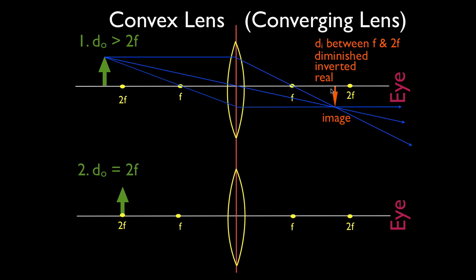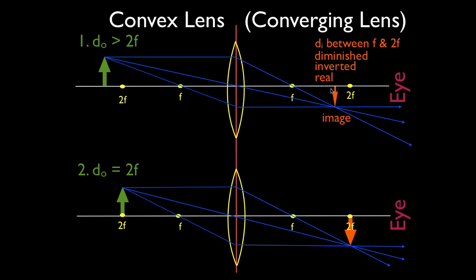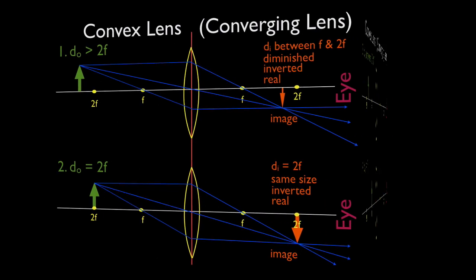Now the object is exactly at 2f from the lens. We draw parallel-F, then F-parallel, then straight through the center, and there is our image. When the object is at 2f, the image will always be at 2f — the image distance is 2f. The image will always be the same size as the object, always inverted or upside down, and always a real image — an image created by converging light rays.